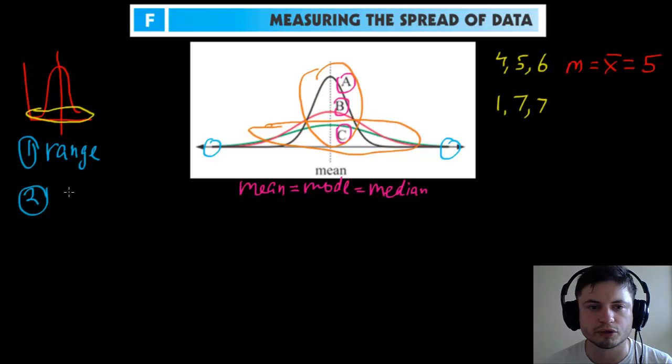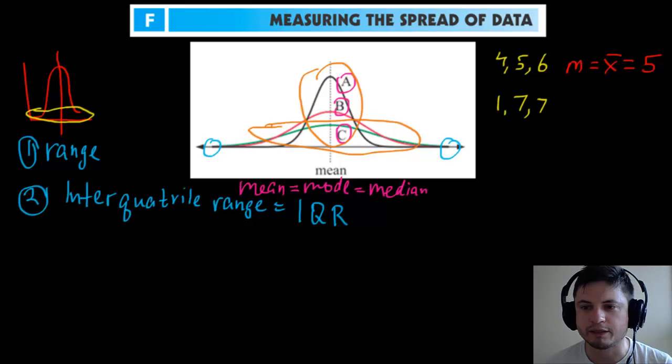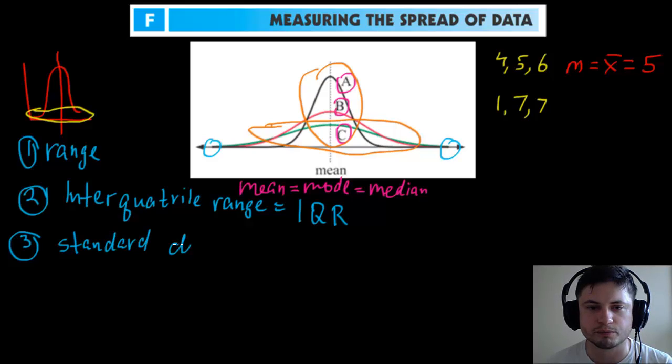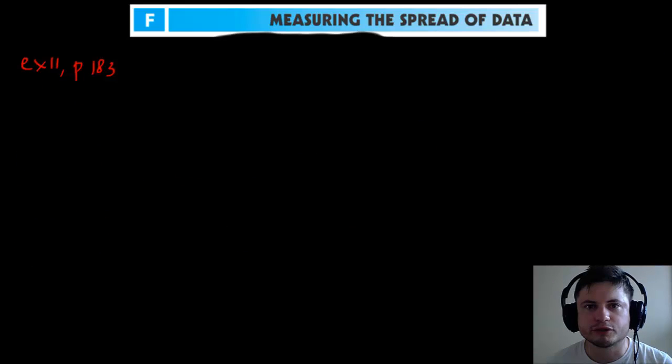is called interquartile range, or basically IQR. This is something you can find on your calculator. The third one we're going to look at later is called standard deviation. This is the one you really should know. It's probably the most difficult one and also the most important one. Alright, so let's talk about interquartile range.